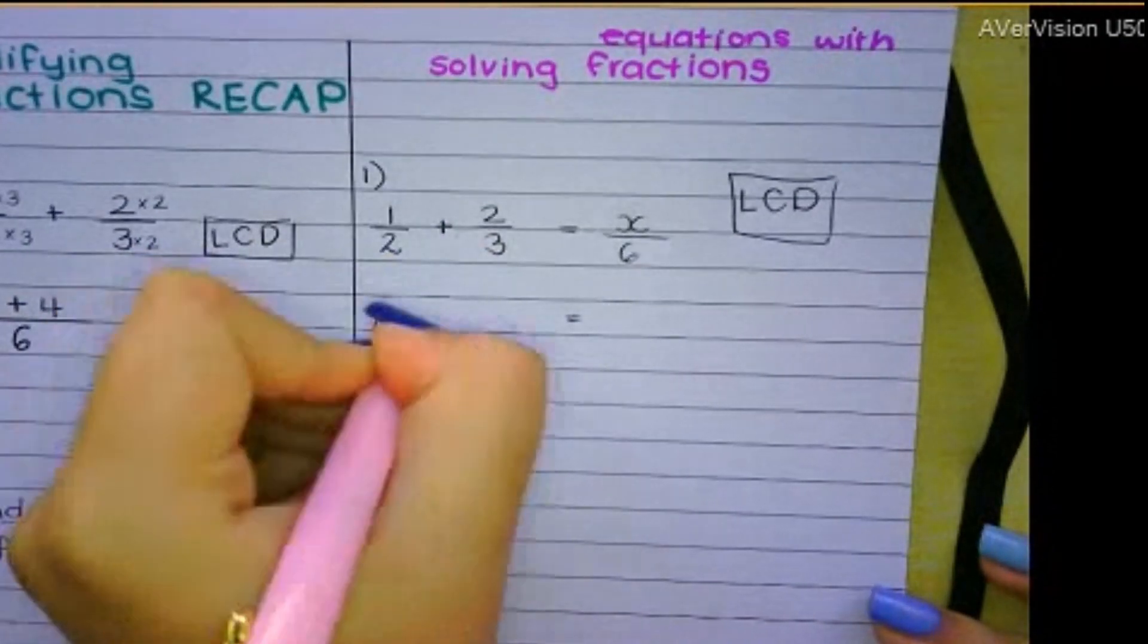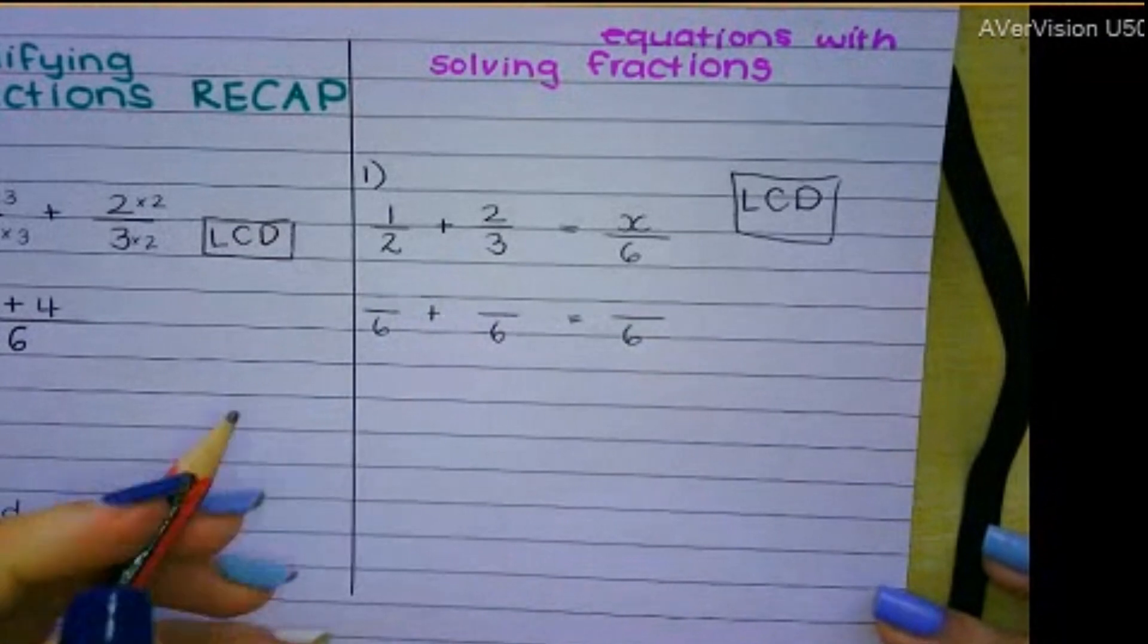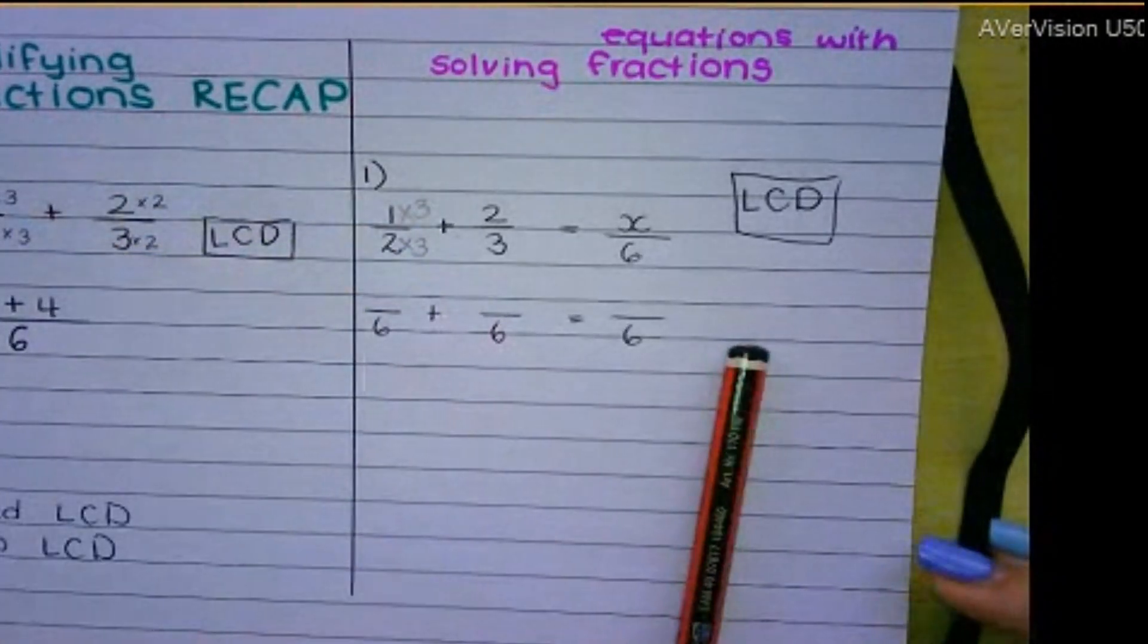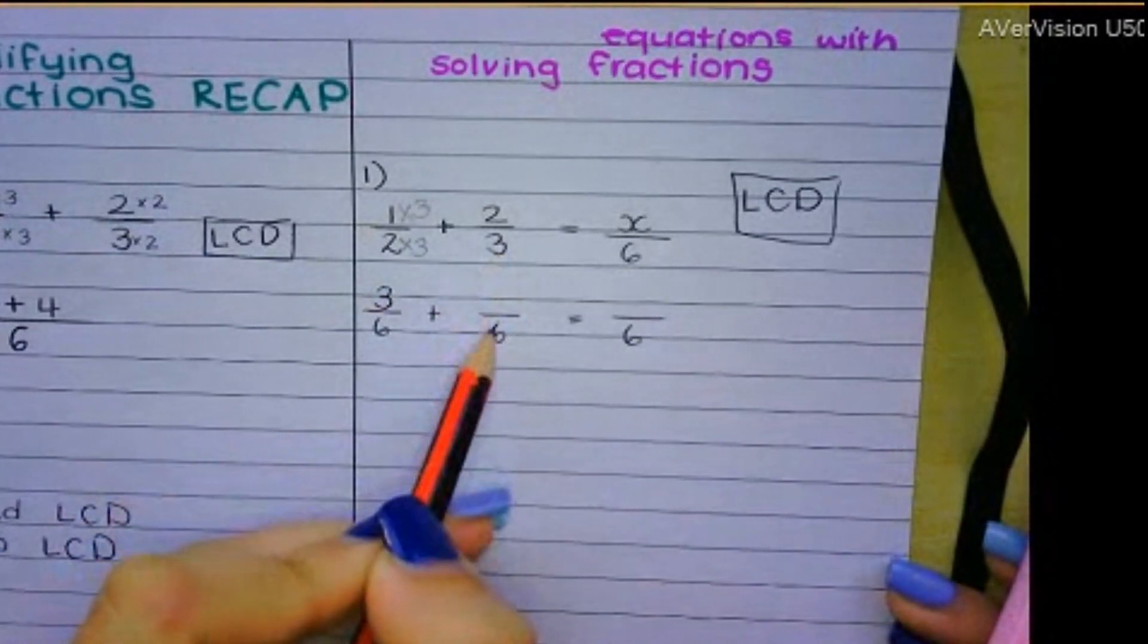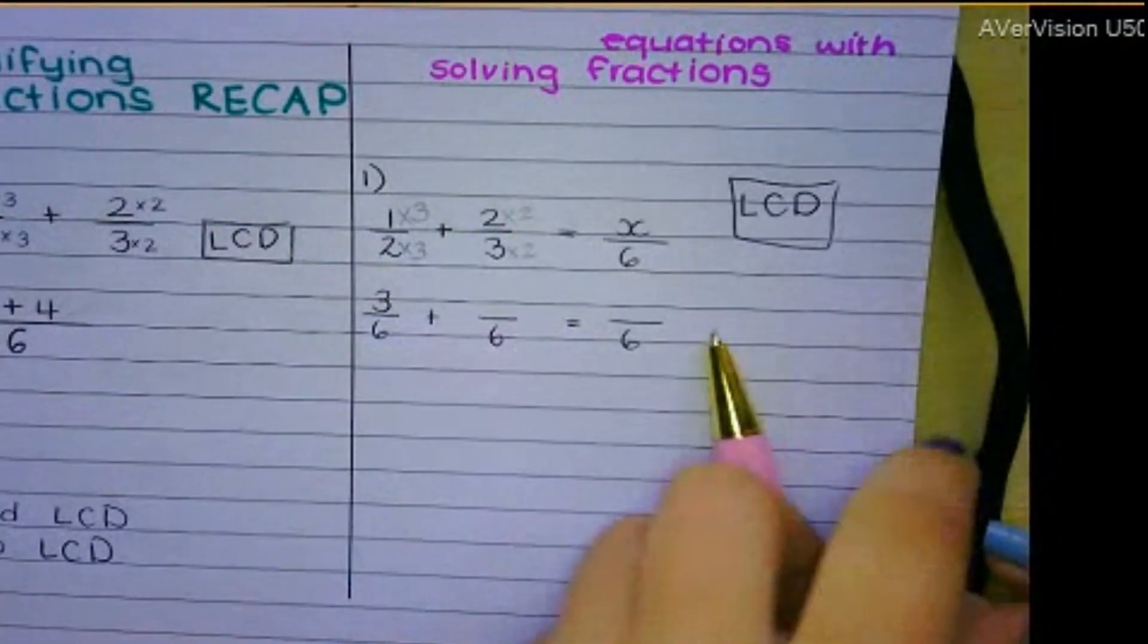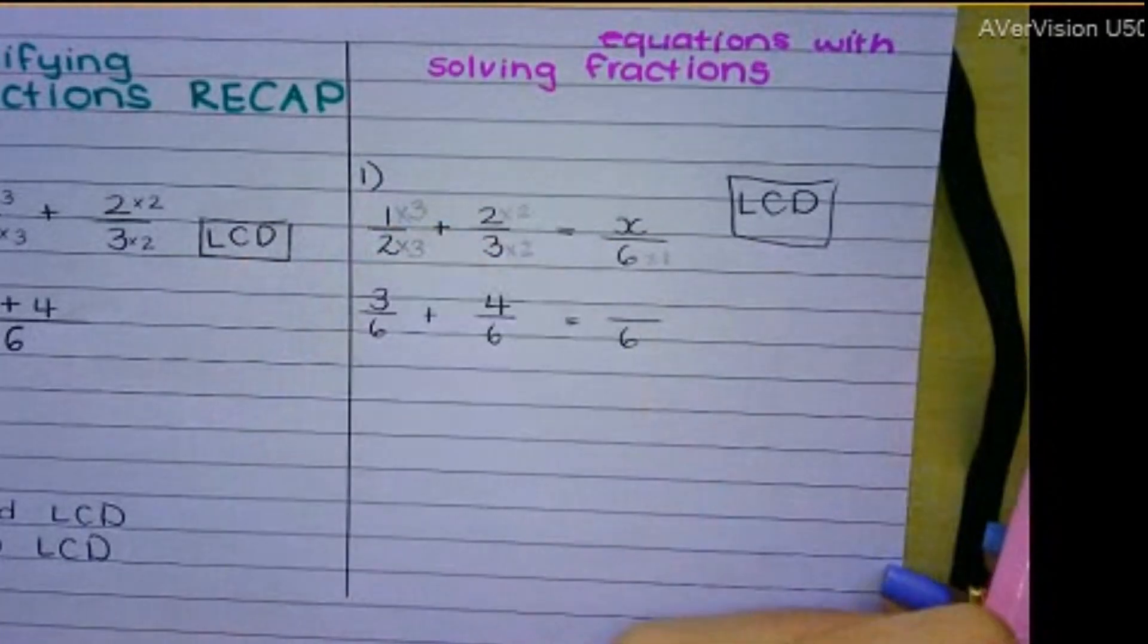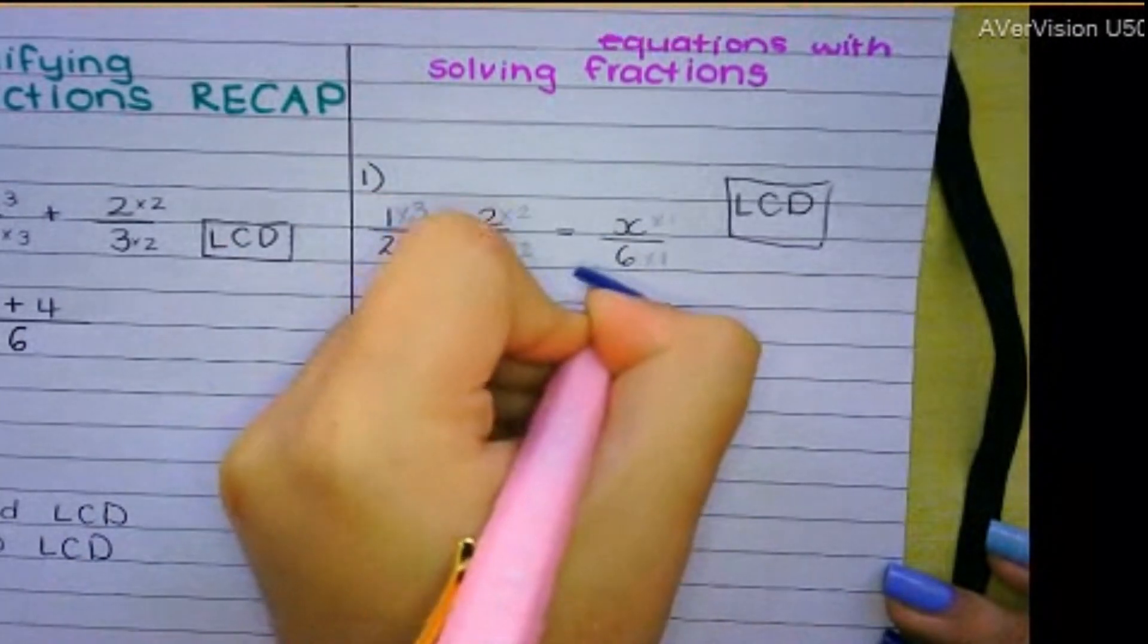So if I'm changing the bottom here to 6, I must change them all to 6. And that one to 6. So then you ask yourself, what must I do to 2 to make it 6? You times by 3. So you need to times the top by 3. So 1 times 3 is 3. What did I do to the 3 to get it to be 6? You times it by 2. So you need to times the top by 2. So we got 4. And then the last one, 6. To get to 6, you don't need to do anything. You times it by 1, basically. So you need to times the x by 1. So what's x times 1? X.